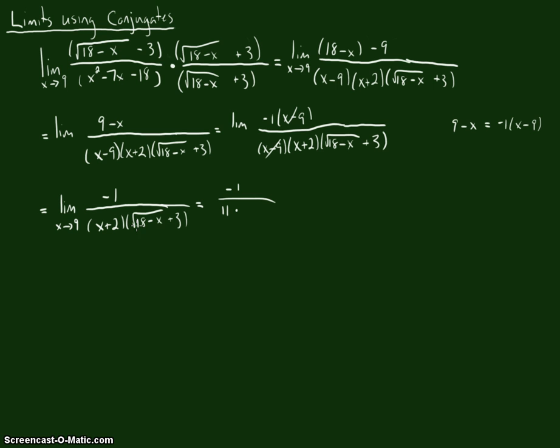So we go ahead and we put the 9 in here. We get 18 minus 9 is going to be 9. Square root of that is 3. So we're going to get 3 plus 3 is 6. And so the final answer here is going to be negative 1 over 66. So congrats to you if you caught my mistake before I did. And anyway, if you have any questions on this, I'll always be happy to answer any questions in class. But good luck, and happy mathing.